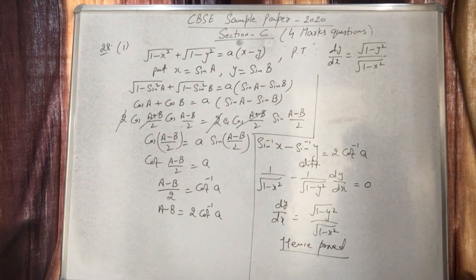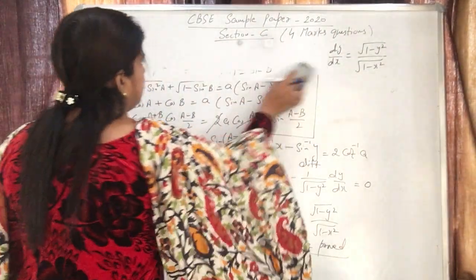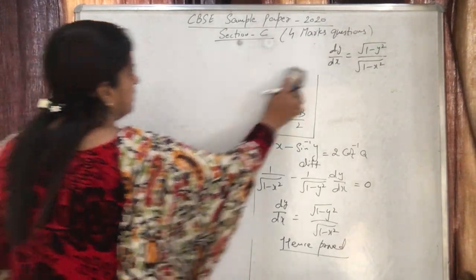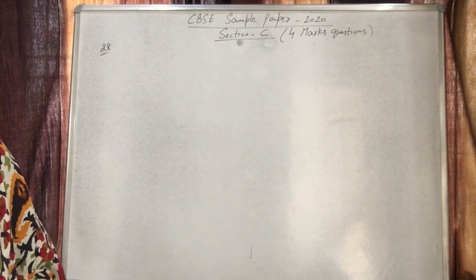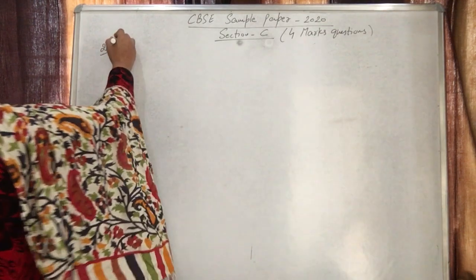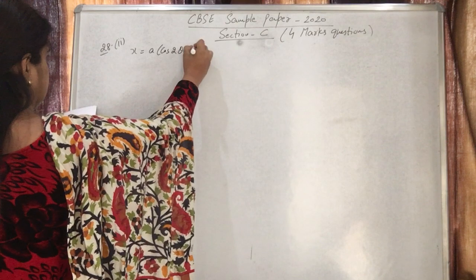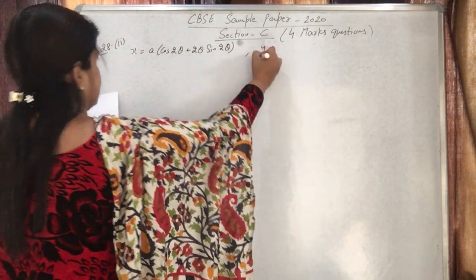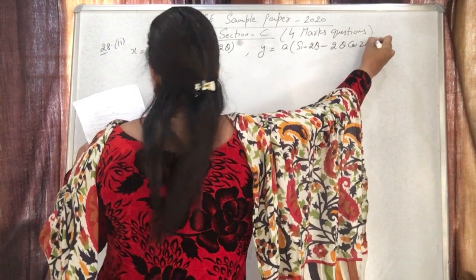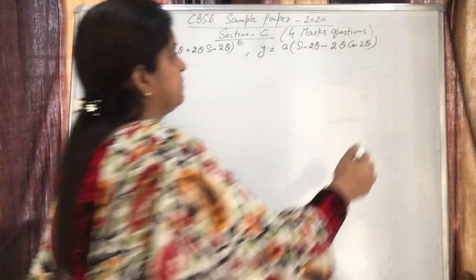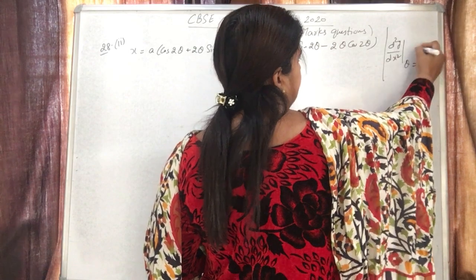The second part of question 28 is relatively easier. Here x and y are given in parametric form and we need to find the second derivative d²y/dx². If x = a(cos2θ + 2θsin2θ) and y = a(sin2θ - 2θcos2θ), find d²y/dx² at θ = π/8.